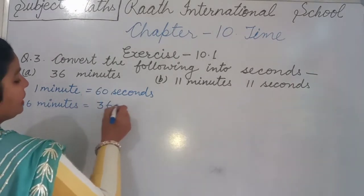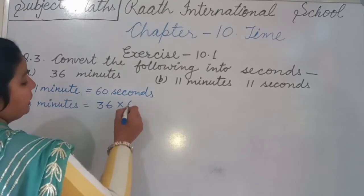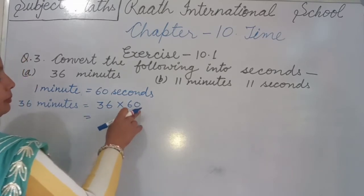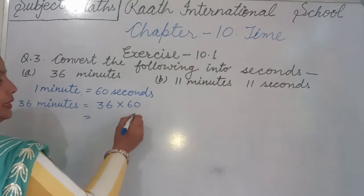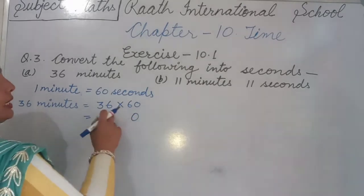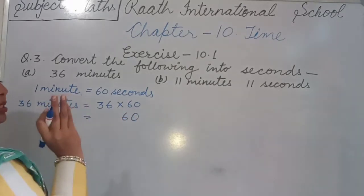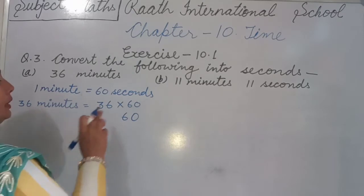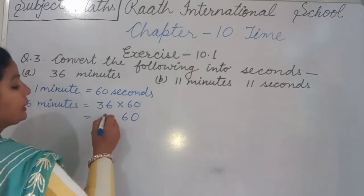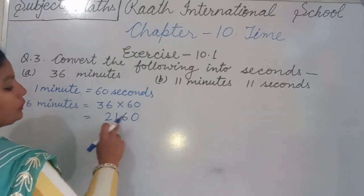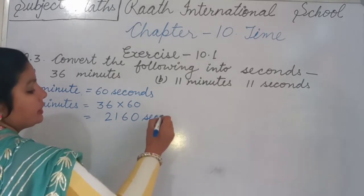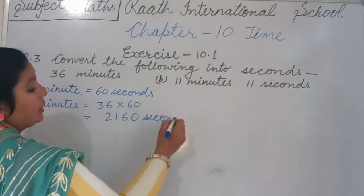Multiply 36 by 60: first write 0, then 6 sixes are 36 carry 3, 6 threes are 18 plus 3 is 21. The result is 2160 seconds. That is the answer for Part A.